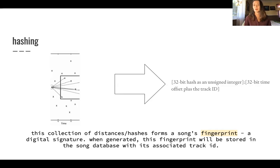To fingerprint millions of these songs. And it even works for songs that are only on a different streaming platform. It works for remixes. So they've been very proactive about scraping the web for new songs. When generated, this fingerprint or collection of distances will be stored in a song database with its associated track ID. It's basically stored as that hash, which is time invariant like we discussed on the last slide, and then it's stored with its time offset plus the track ID.